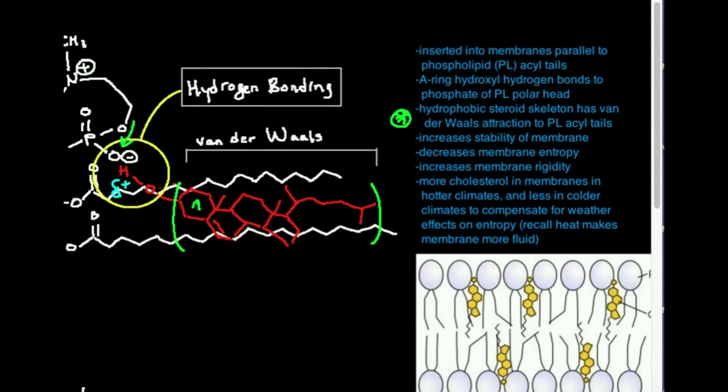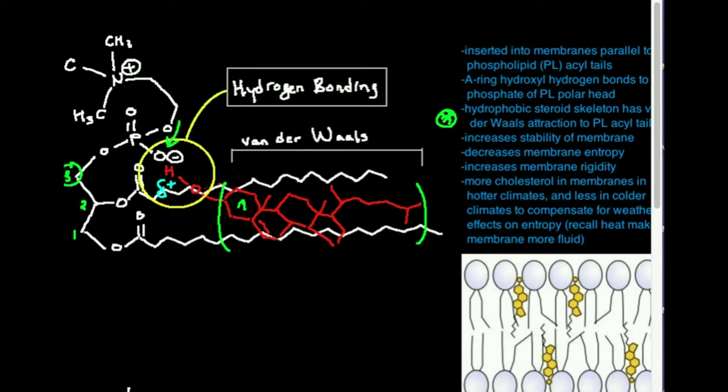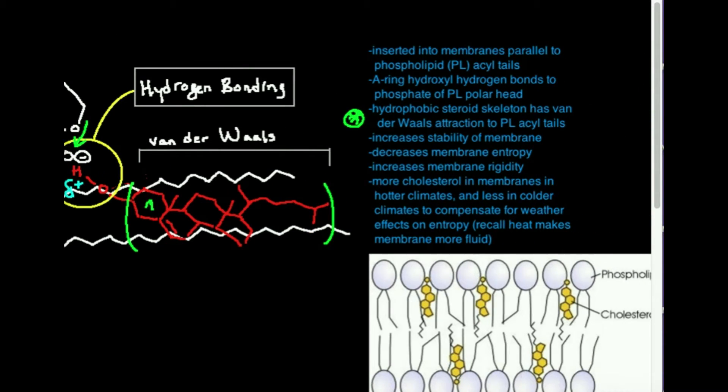So I said it in the last video, and I'll just say it again, the more cholesterol you have in the membrane, the more stable the membrane is. In other words, cholesterol increases the stability of the membrane, and because there's all these attractive forces that are holding the tails in place, you drastically decrease membrane entropy, and as a result, that increases the membrane's rigidity.